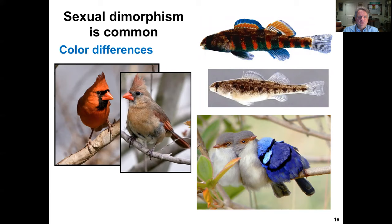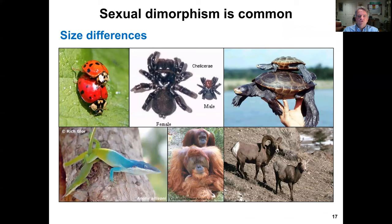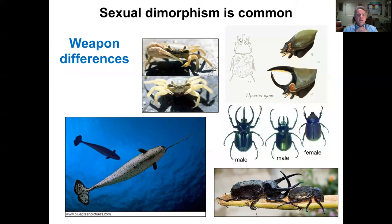Sexual dimorphism also appears in size, where males are often larger — but not always. In some cases on the bottom it's males that are larger, but in other cases it is females that are larger. Another common aspect of sexual dimorphism is the presence of weaponry in animals, typically — but not always — found on the male individuals of the species.